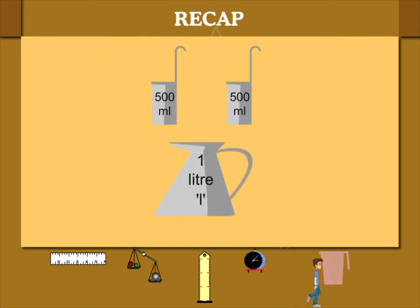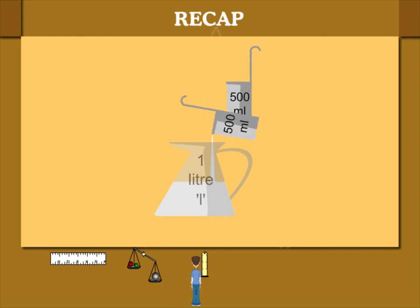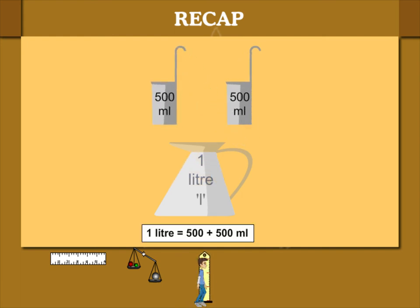Here are 2 containers of 500 milliliters and a 1 liter container. If you pour out the small containers, you get 1 liter because 500 milliliters plus 500 milliliters is 1000 milliliters or 1 liter.